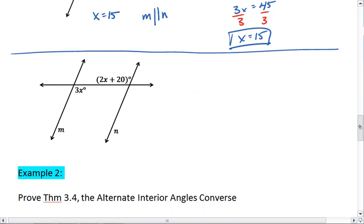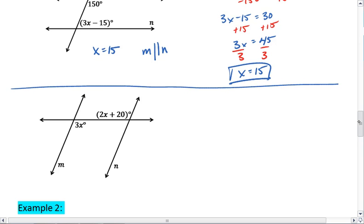Let's look at this second example. In this example, we have our two lines, m and n, cut by our transversal. And we are looking at alternate interior angles. So we want them to be congruent,